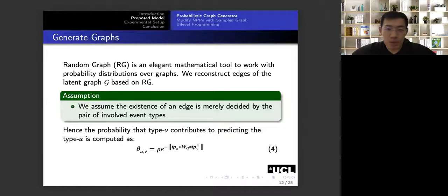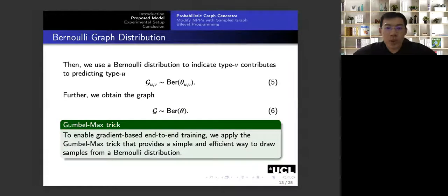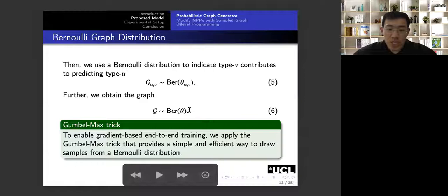So the first part is to generate graphs. So we use the theory of random graphs to generate graphs. It is an elegant mathematical tool to work with probability distributions over graphs. So we reconstruct the edges of random graphs. And here we have an assumption that the existence of an edge is merely decided by the pair of involved types. And we compute the probability of an edge according to equation 4. And after that, we use the probability theta as a parameter of Bernoulli distribution. And from this distribution, we could generate a sample graph, a sample of binary value, G_uv. And as a further step, we could generate G from the Bernoulli distribution.